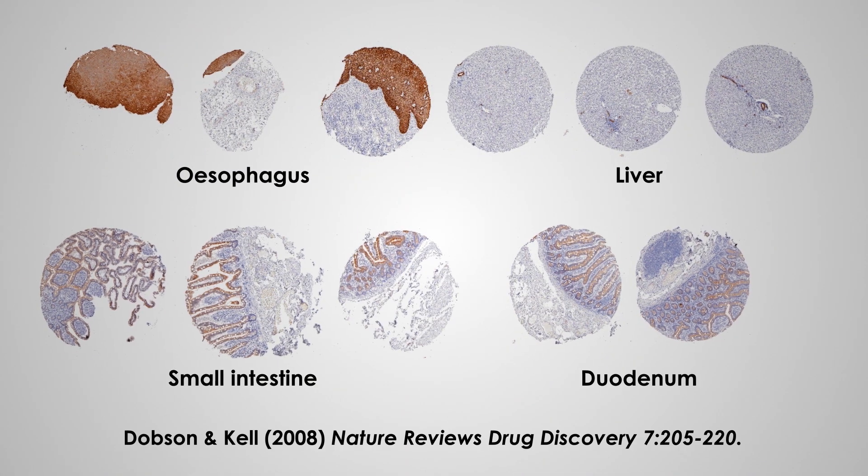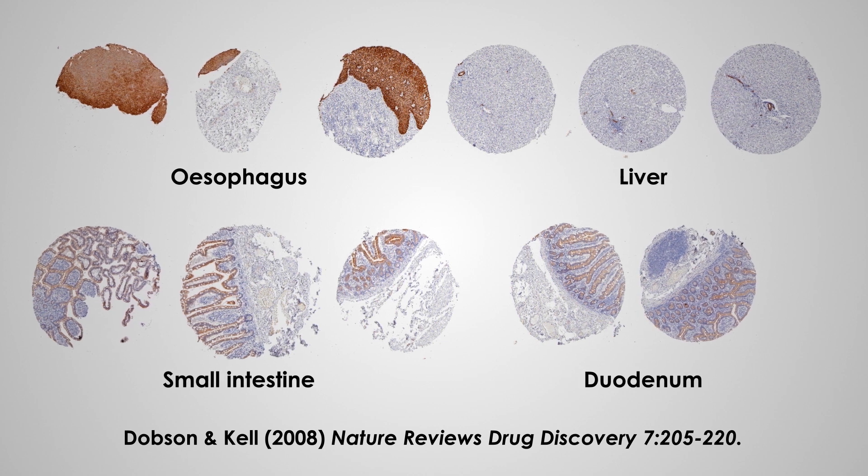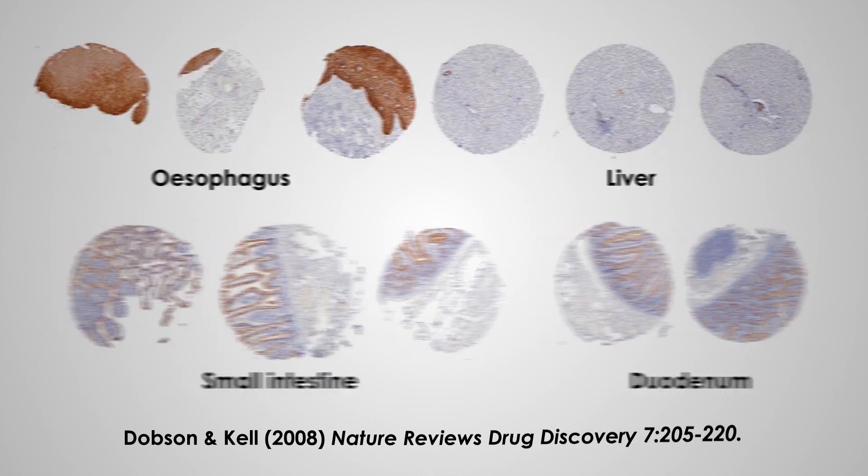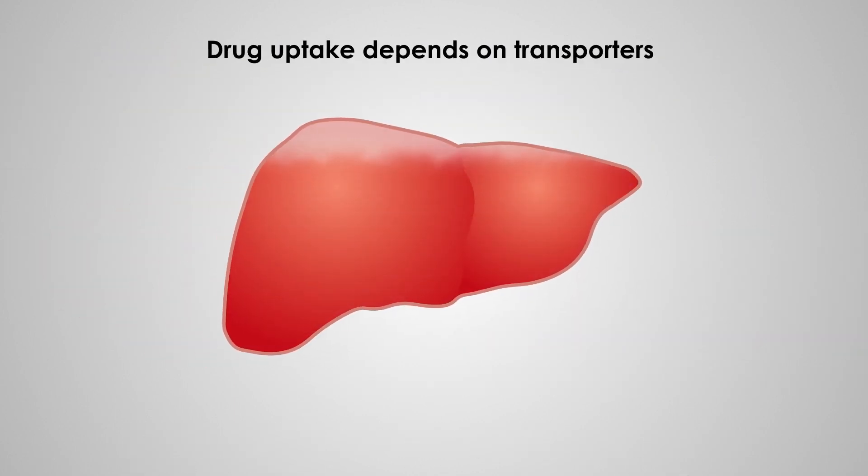Different cells contain different transporters. This determines whether a cell can take up a drug or not. There are two main reasons why drugs fail in development. Drug doses are measured at the organ level but don't account for the details of drug uptake.